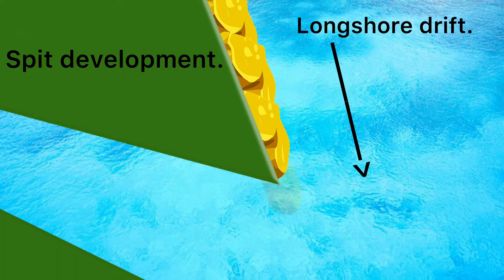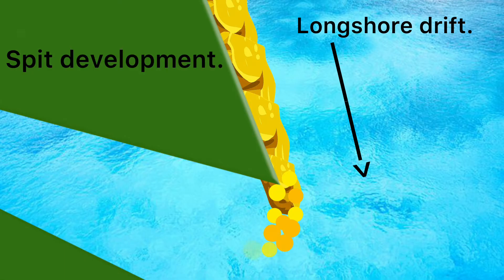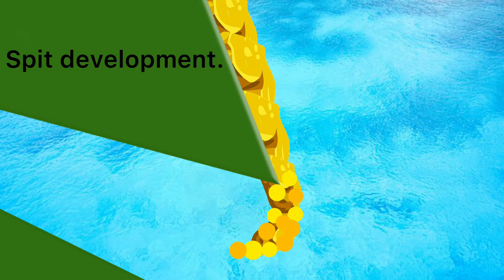This starts a process of spit growth, as more material is deposited and the land slowly develops. The end of the spit starts to curve back towards the land due to winds and tidal currents, with the curve known as a recurved end. Behind the spit, the water is sheltered, so deposition occurs, and this creates salt marshes.